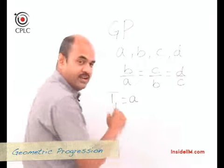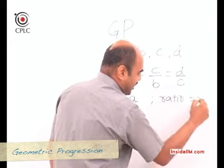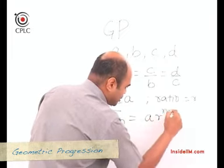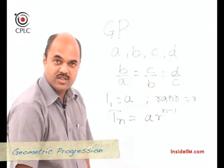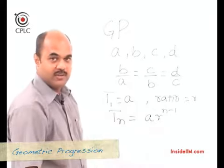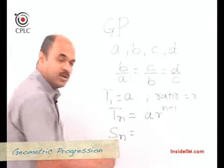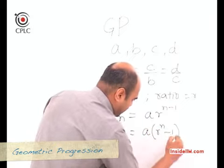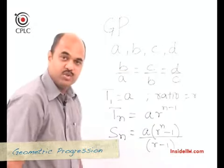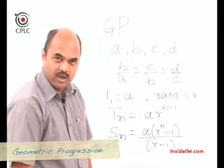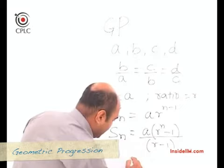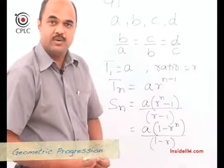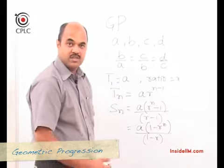If we denote the first term as A and the common ratio as R, then the formula for the nth term in a geometric progression is A into R raised to (n minus 1). SN gives us the sum of the first n terms in a geometric progression. This formula is A multiplied by (R raised to n minus 1) upon (R minus 1), used when R is greater than 1. If R is less than 1, we use A into (1 minus R raised to n) upon (1 minus R).